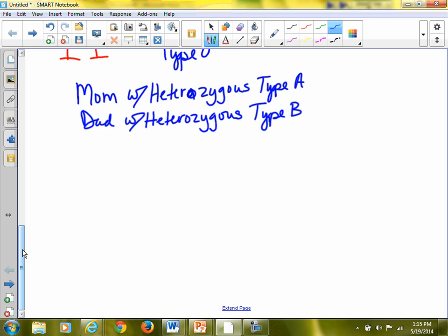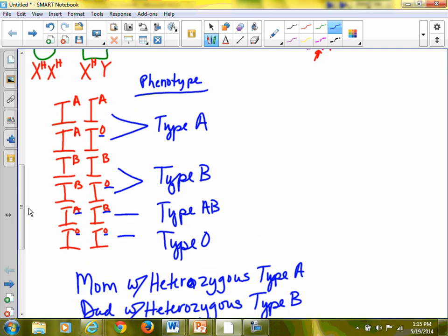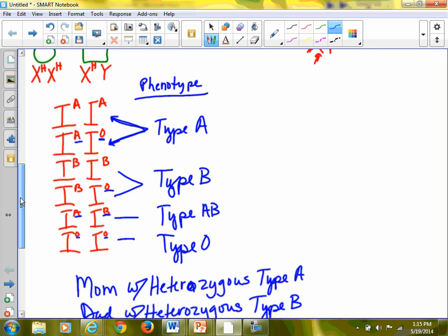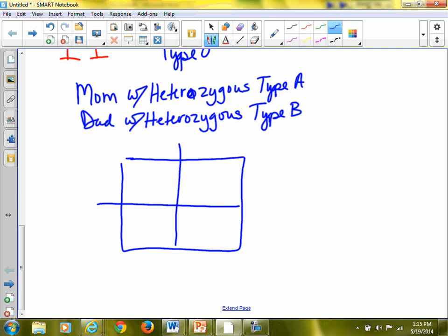Dad with heterozygous type B. So when we look at type A, let's scroll back again. Type A heterozygous. So these are type A right in here. And the only one of those that's heterozygous is the AO. So there's our blood. There's our genotype. So let's start our Punnett square with our genotype. Mom is on the side. So we have I, A, and O. There's her genotype.